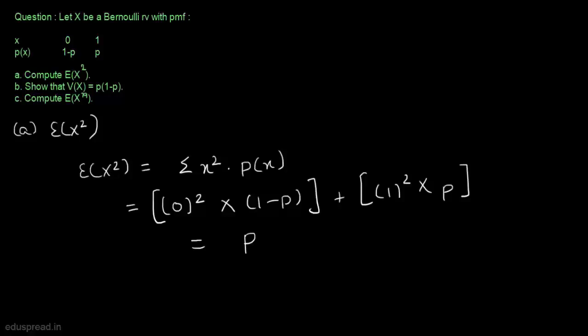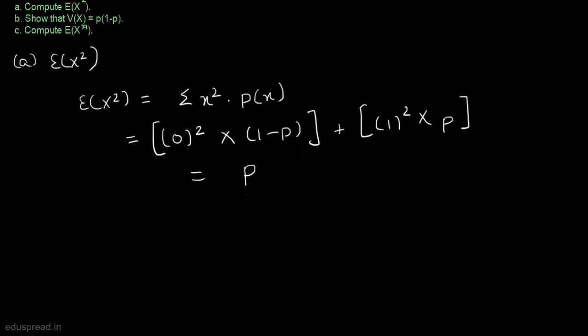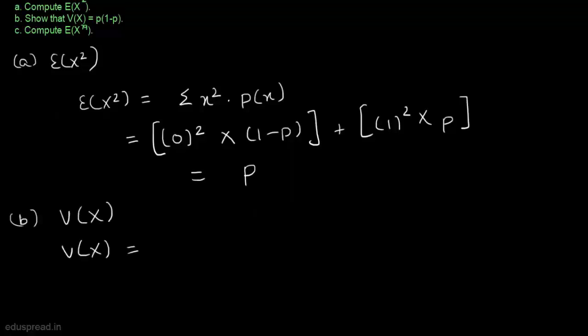Now let's move to part b. In part b, we have to show that variance of x is equal to p multiplied by 1 minus p. To calculate the variance of x, let's use this formula: variance of x equals expected value of x square minus expected value of x whole square.